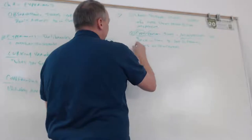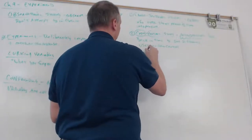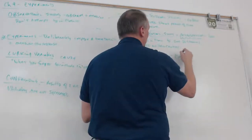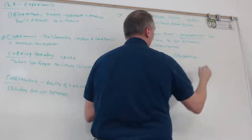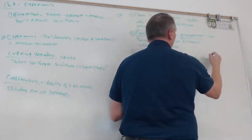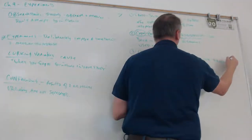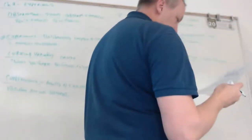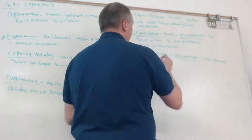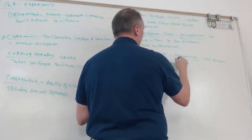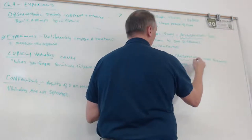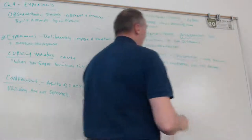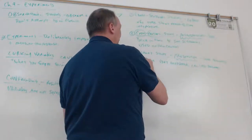A third observational study type is the cohort study. The cohort study is prospective — you look forward in time. These are really good because you get good data. They can last decades, which also makes them expensive.